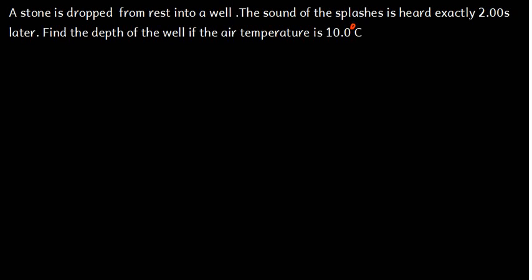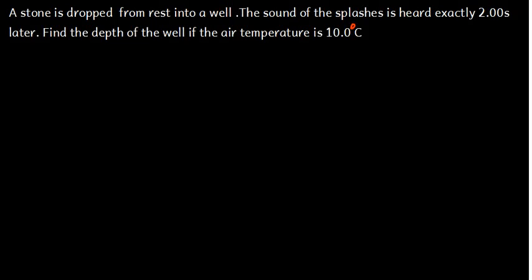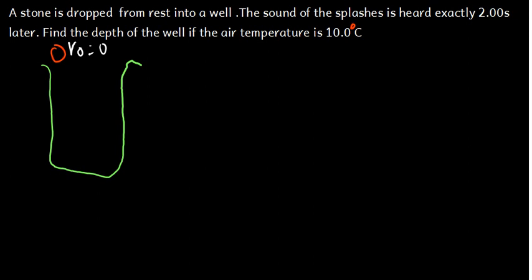It is very important for us to understand the question and then come up with a free body diagram and the data we have. They are saying we have a well — let's draw the well — and here is the stone. When you are dropping something from rest, the initial velocity is zero. There is water inside the well. The stone comes down until it reaches the water. We call the time for the stone to fall T1.